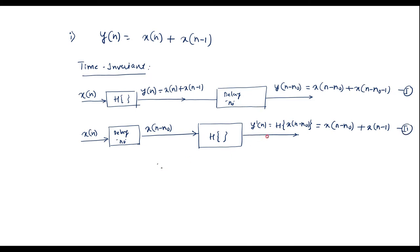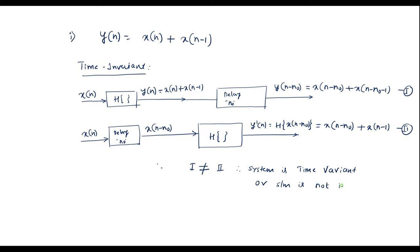We can observe that y dash of n is not equal to y of n minus n-naught. That is, equation 1 is not equal to equation 2. Therefore the system is time variant, or equivalently the system is not time invariant.